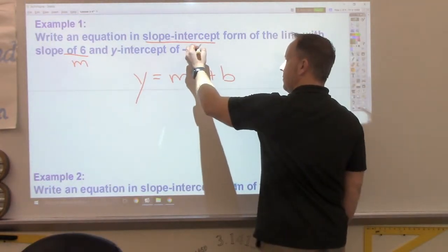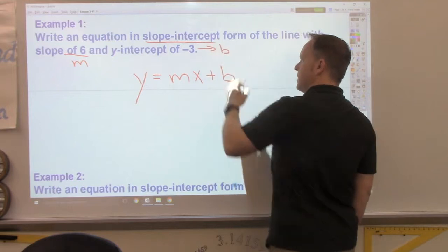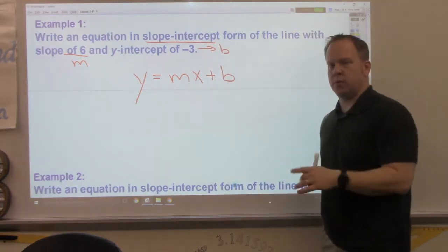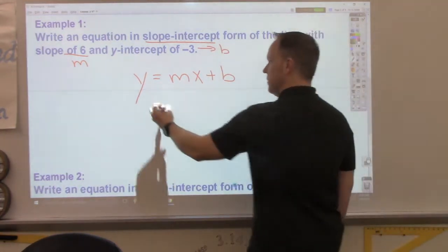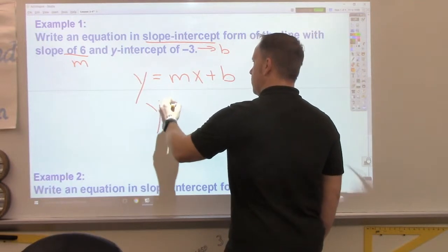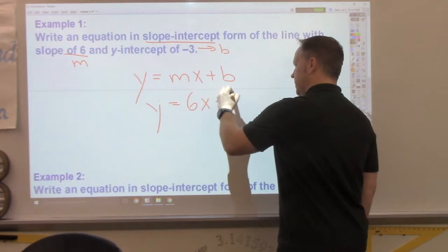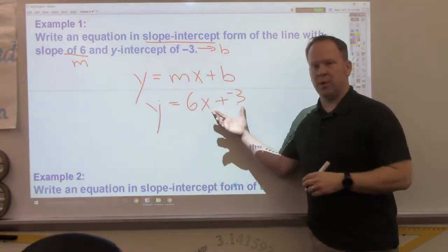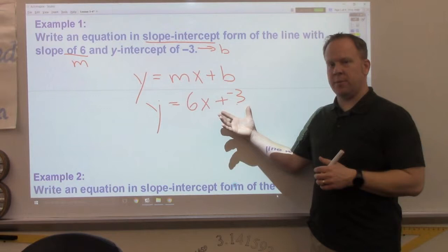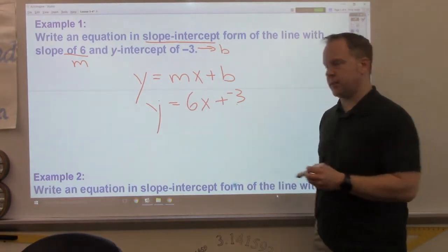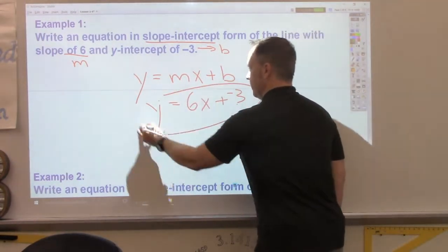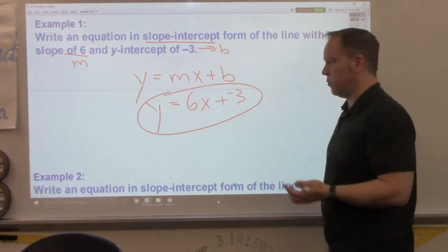y-intercept, negative 3, that's my b. Folks, plug those two numbers in and you're done. That's it. y equals 6x plus negative 3. You can put plus negative 3 or if you want to put simply minus 3, either form is acceptable. That's example 1, done.